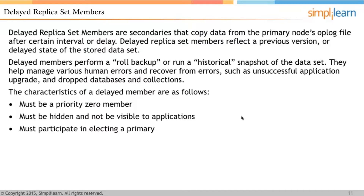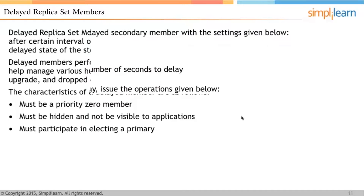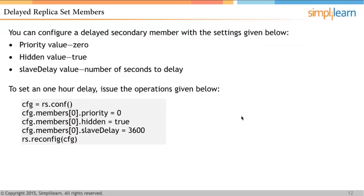The characteristics of a delayed member are: it must be a priority 0 member, it must be hidden and not visible to applications, and it must participate in electing a primary. A delayed secondary member is configured with a priority value of 0, hidden set to true, and a slave delay value specifying how many seconds to wait before copying the op log.